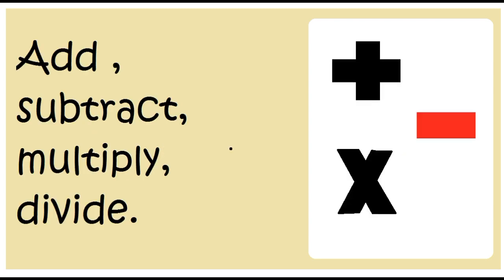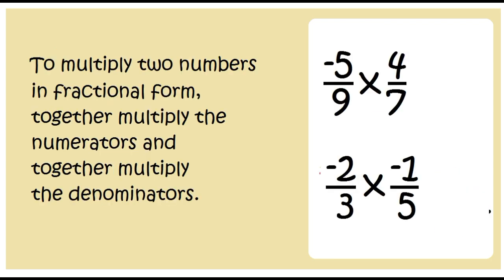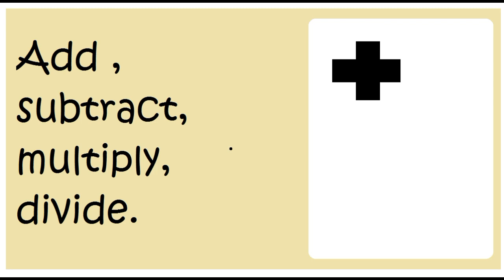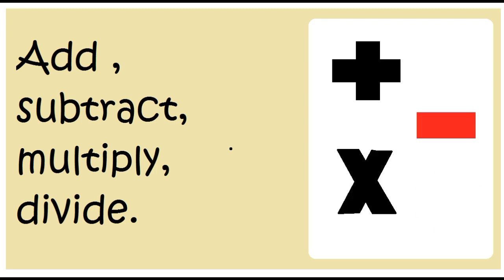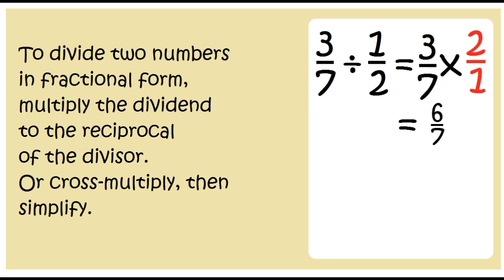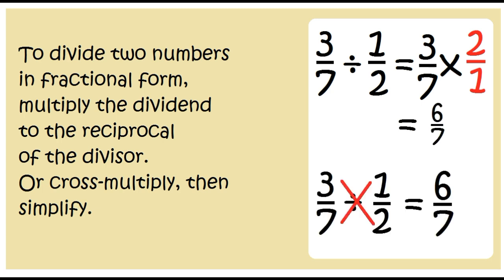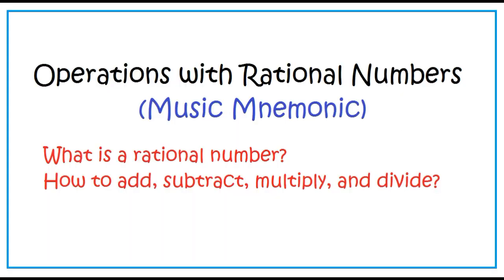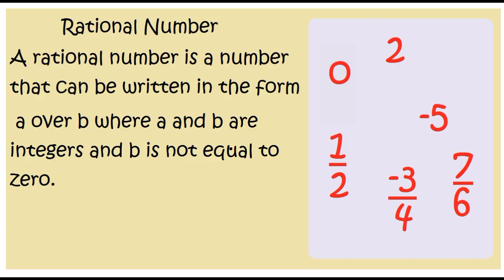Add, subtract, multiply, divide. Add, subtract, multiply, divide. Multiply two numbers in fractional form together: multiply the numerators together and multiply the denominators together. To divide two numbers in fractional form, multiply the dividend by the reciprocal of the divisor, or cross multiply then simplify. Oh baby, please always simplify! Oh yeah!